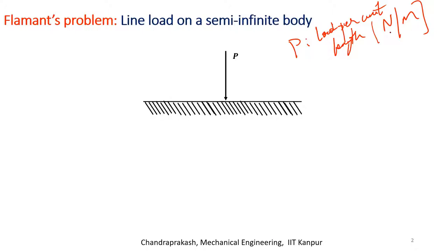What kind of problem is it? Is it a plane strain problem or a plane stress problem? The rope is long, and I have drawn the cross section. At any cross section, there is a load — a traction due to the weight of the rope — and it is the same everywhere in any cross section. So this is basically a plane strain problem. Some books incorrectly write it as a plane stress problem, whereas it is actually a plane strain problem.